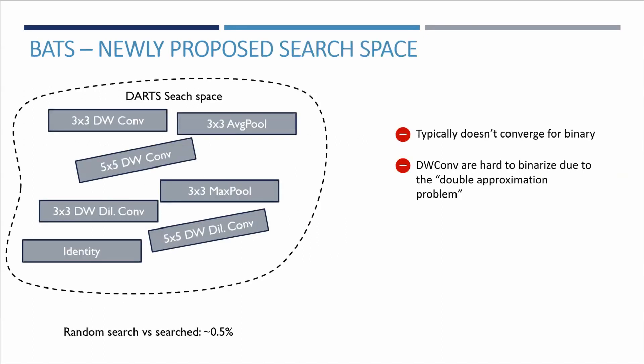One of the key components that make NAS successful is the constrained search space, its quality being often the determining factor on how good the searched architecture can perform. For example, there is only a 0.5% accuracy gap between a random search and DARTS on CIFAR-10.